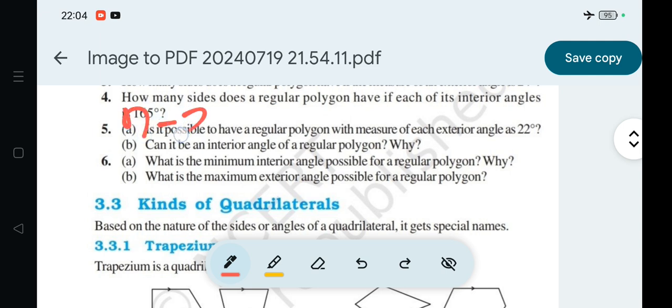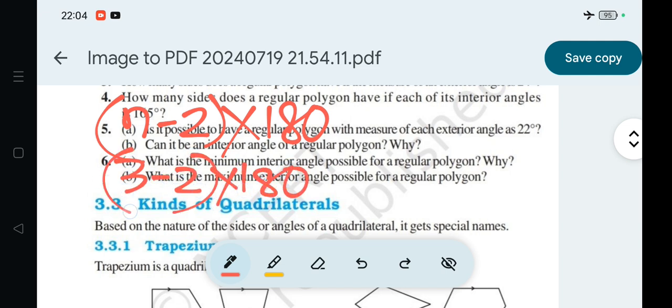The formula is (n-2) × 180, where n is the number of sides. If we put n equals 3, this becomes (3-2) × 180 equals 1 × 180, which equals 180.